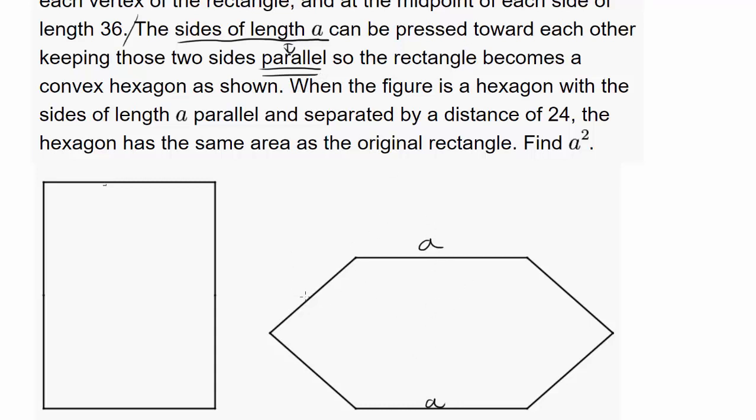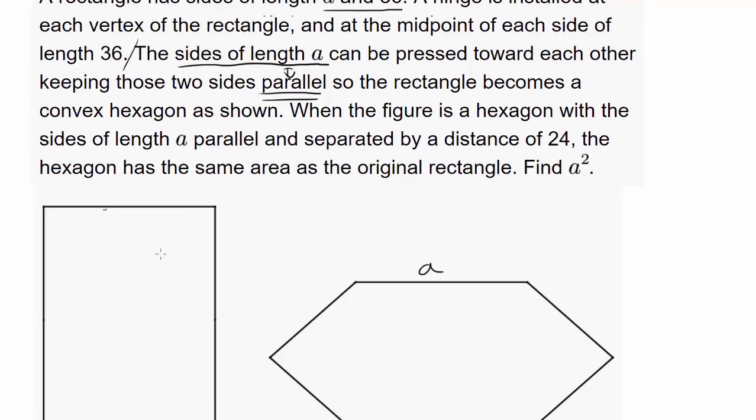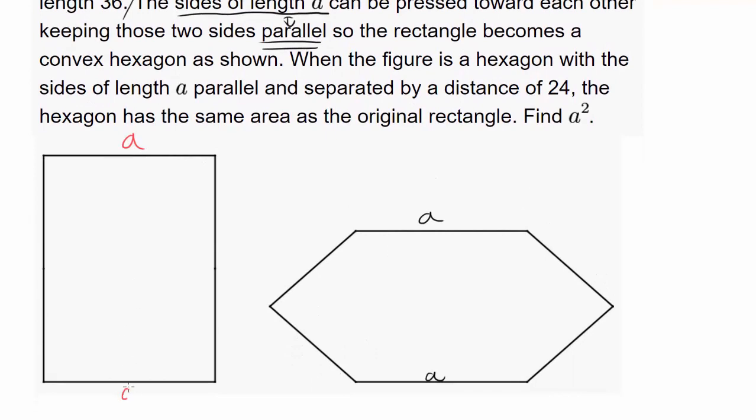And we are squeezing down the sides of length A. So what's happening is that you have installed a hinge. So you know that's side length A, that's side length A, that's 36, that's 36.